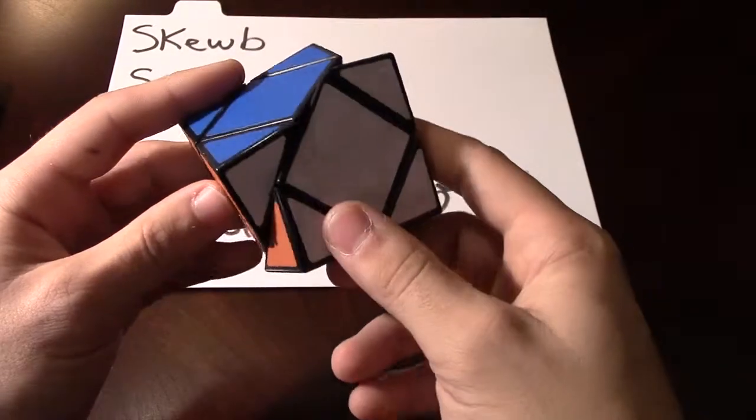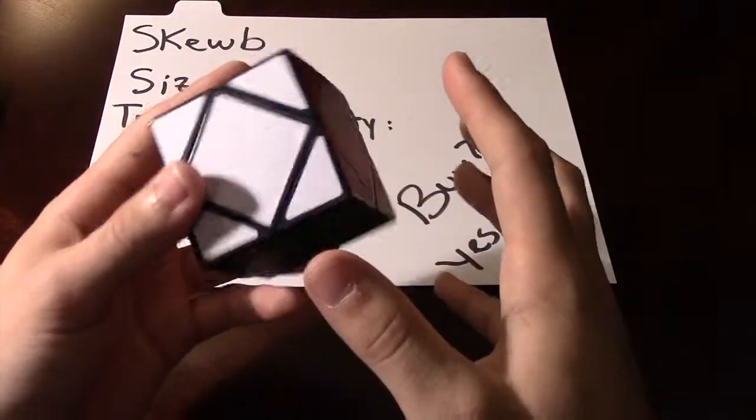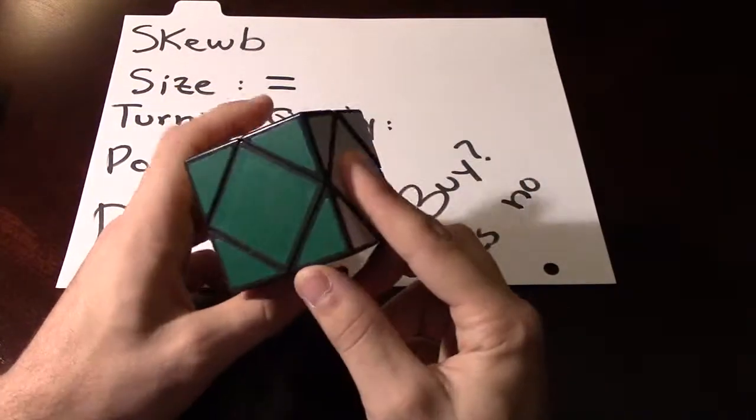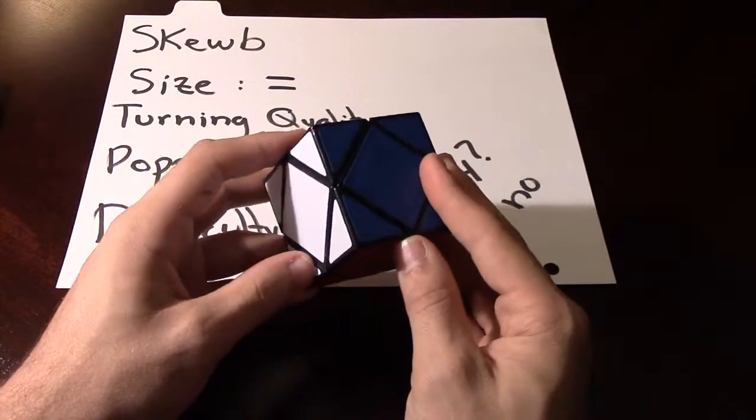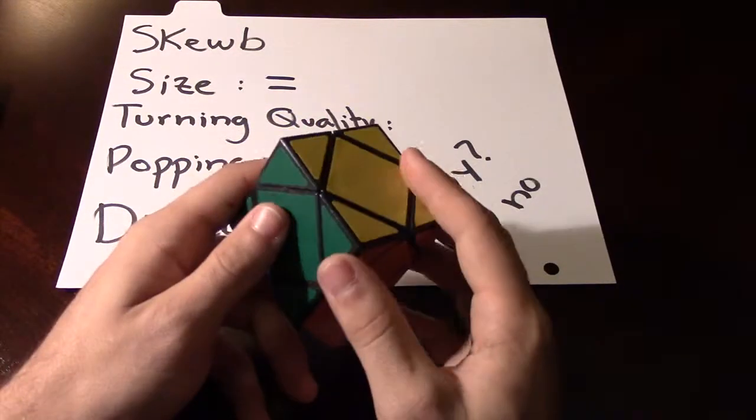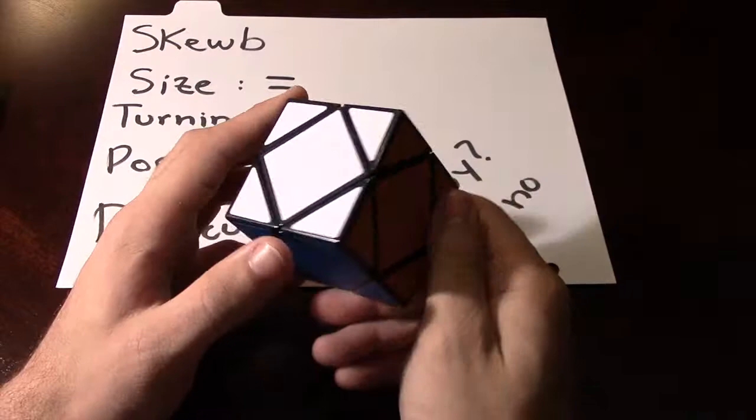So there are two places while turning where it clicks and gets stuck a little bit. But that's just a clicking mechanism. It's not because the cube is faulty or something. It's just made like this, and it's made to act like that, so I can't really blame the cube.